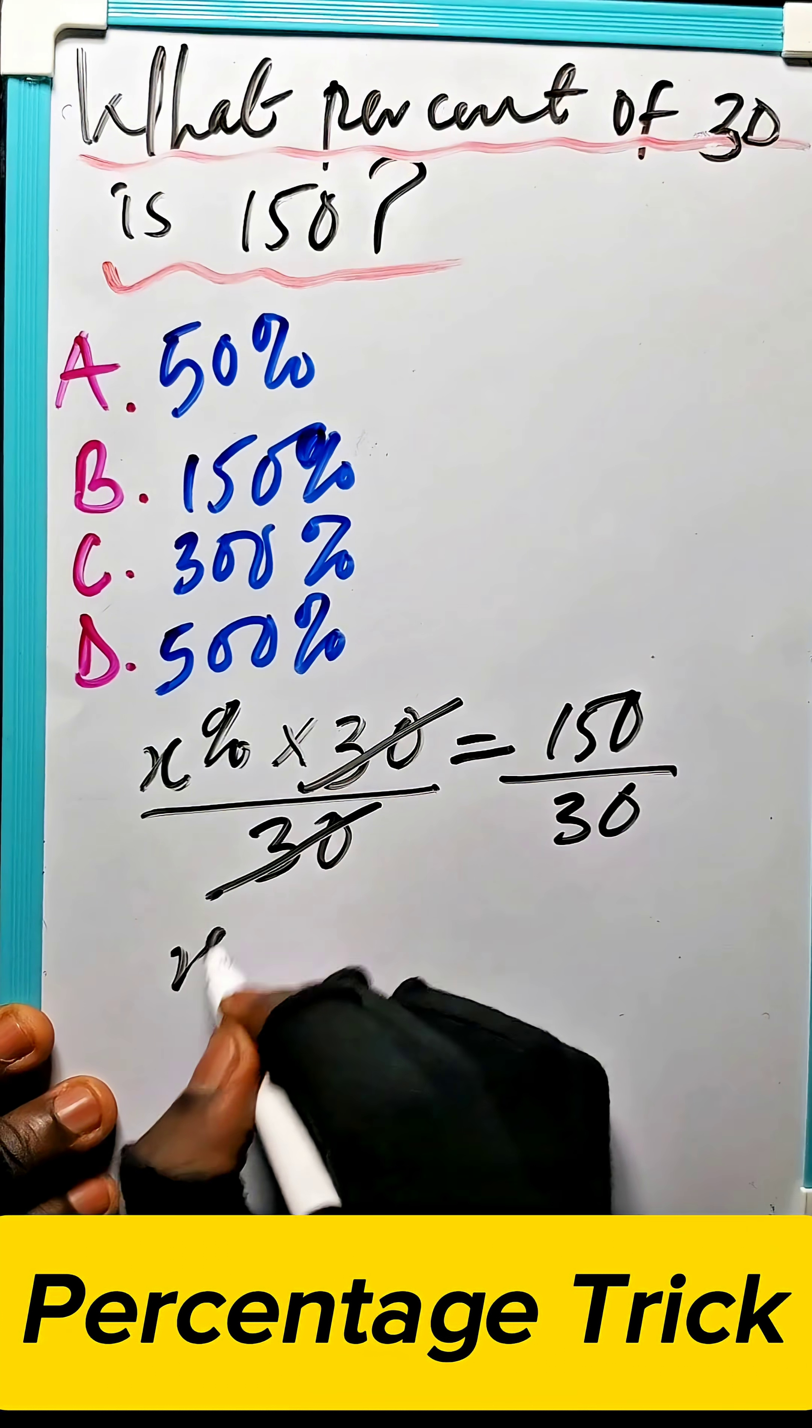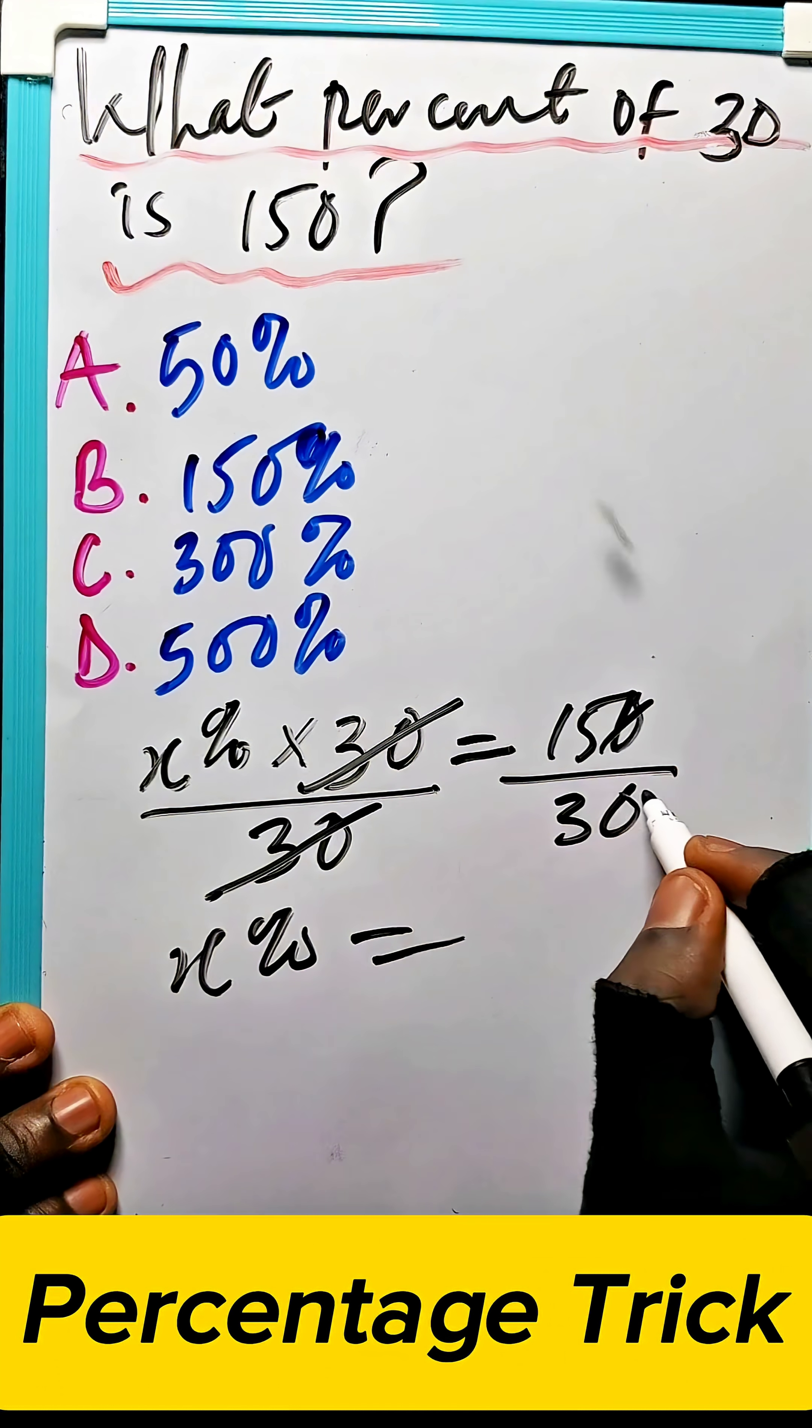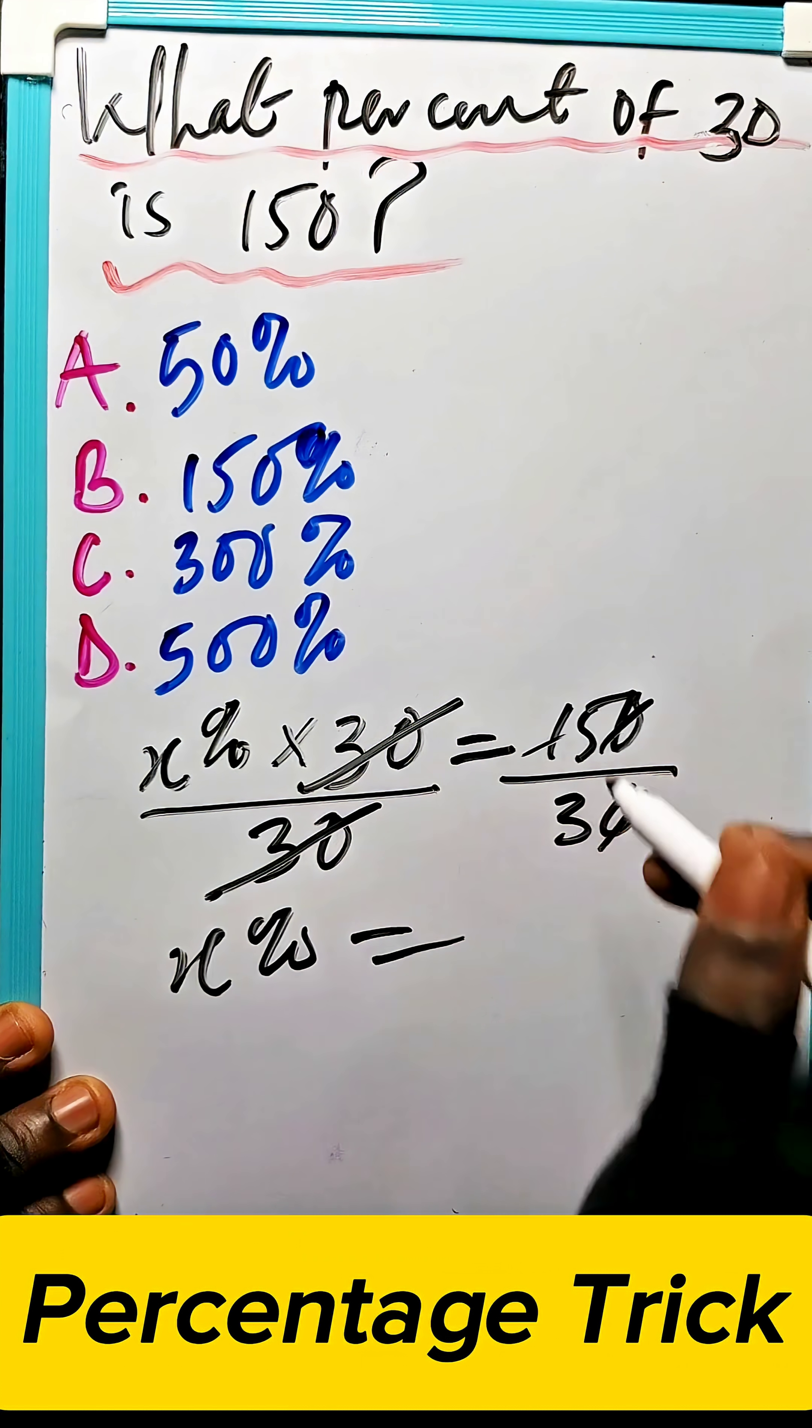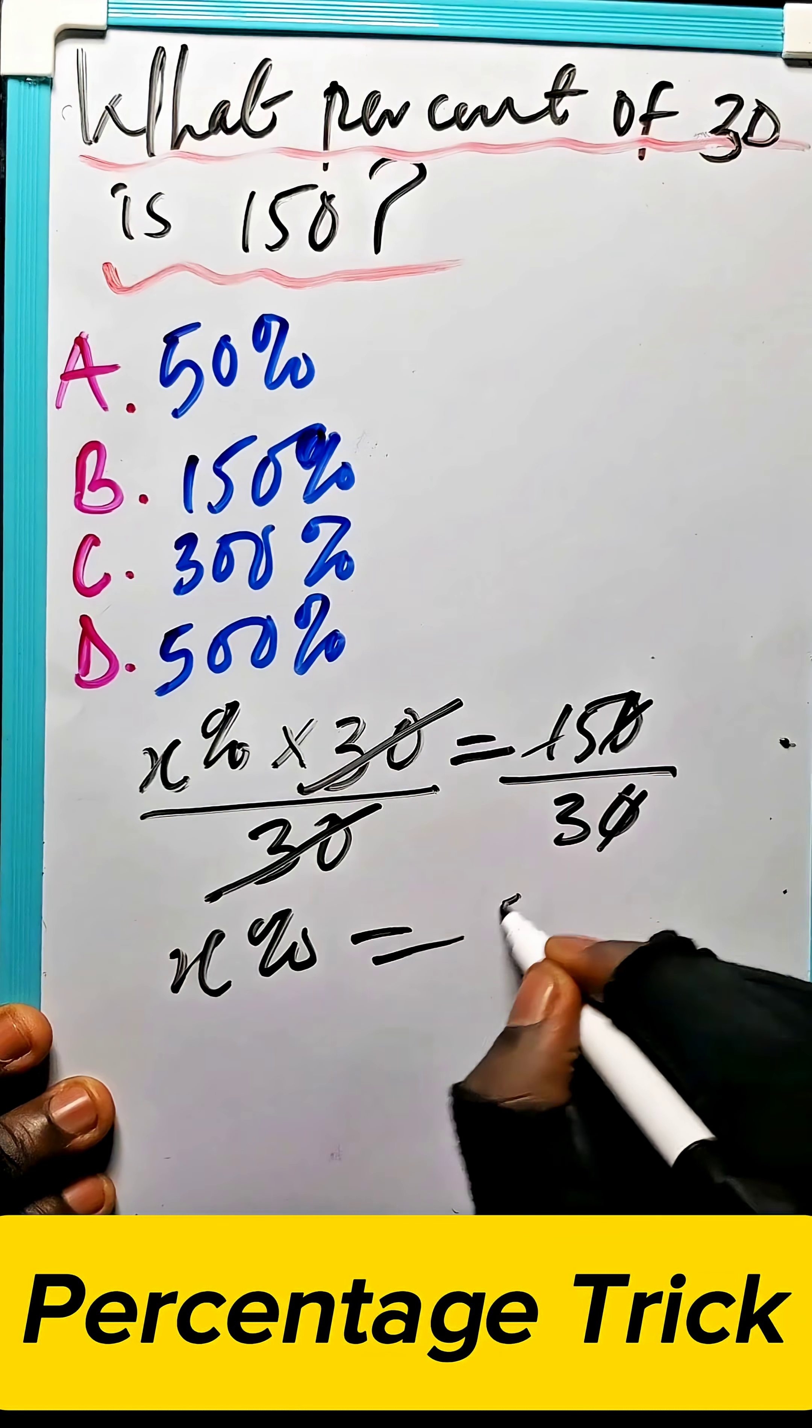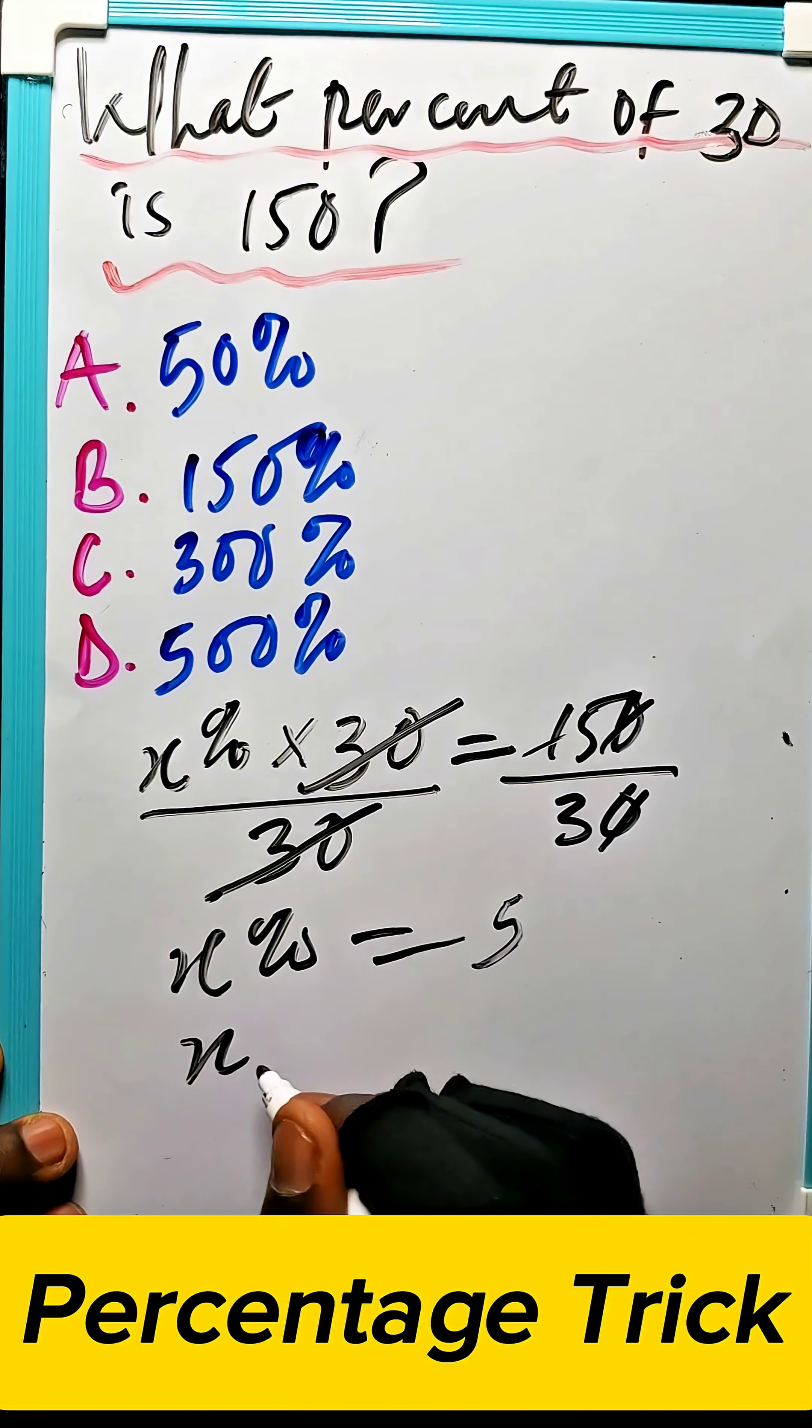You are left with x percent equal to, then this will cancel this, then 15 into, or 3 into 15, is what, or 15 divided by 3 is 5. Then the percentage to find x, that is x equal to 5 percent.